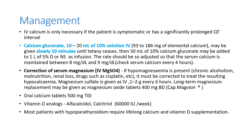For real hypocalcemia — without hypoalbuminemia — if there is significant QT prolongation, symptoms of hypocalcemia, or arrhythmia, give IV calcium gluconate. The dose is 10–20 mL of 10% solution IV, which contains approximately 186 mg of elemental calcium. It should be given slowly, but fast in cases of arrhythmia until tetany stops. For maintenance, 50 mL of 10% calcium gluconate can be added to 1 liter of 5% dextrose or NS as an infusion, adjusting the rate to maintain serum calcium between 8 and 9 mg/dL, checking every 4 hours.